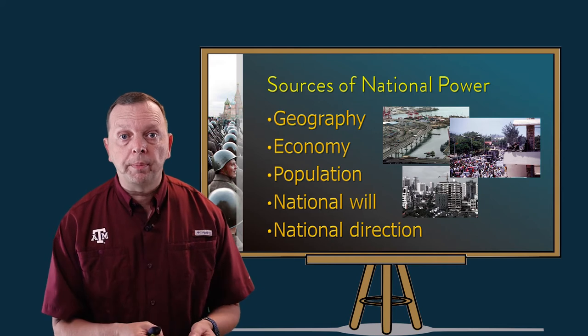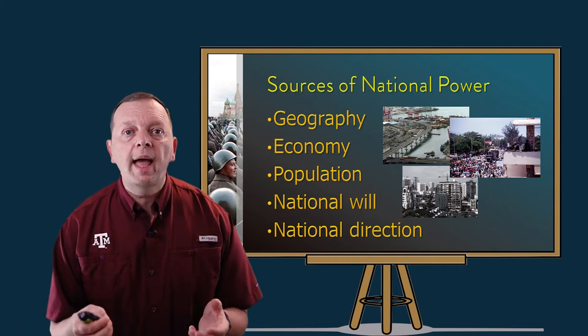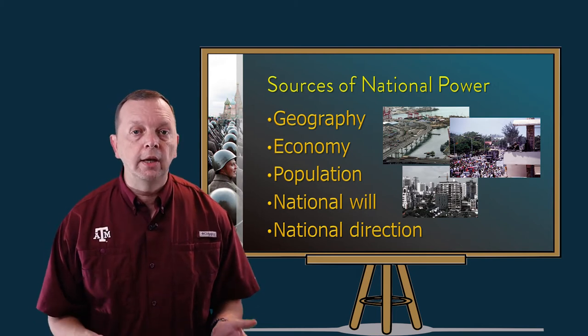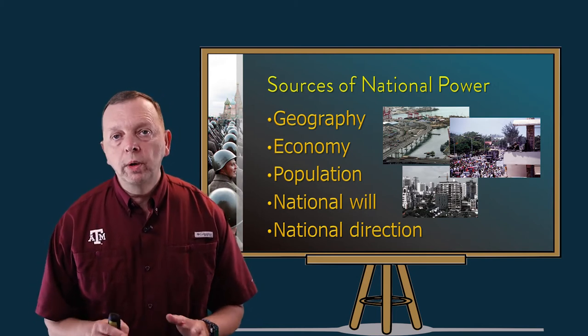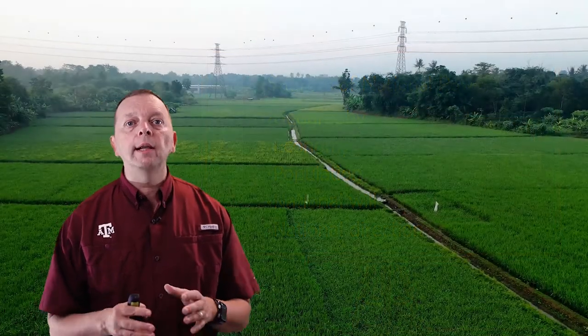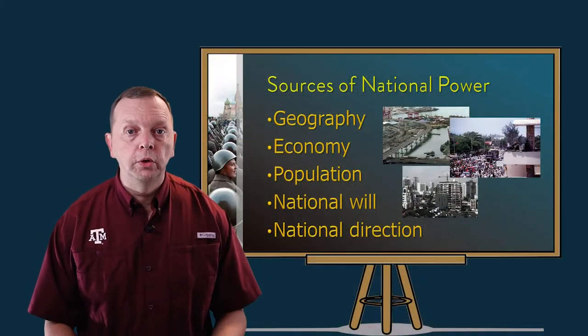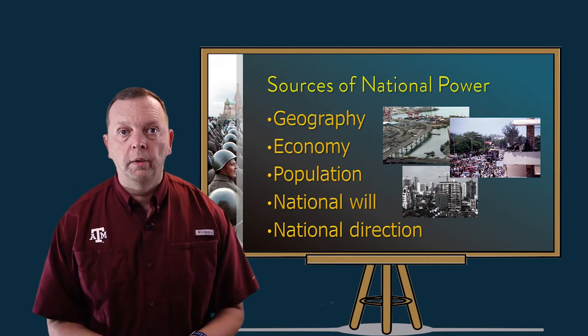If a country has positive population growth, it may have a manpower advantage over less populous neighboring countries — such as was the case with France in the time of Napoleon. The rich North European plain gave France a large agricultural producing region, meaning France had more food and could therefore support a larger army that Napoleon used in his attempt to take over all of Europe.